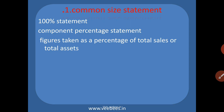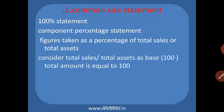In common size statements, the figures are taken as a percentage of total sales or total assets. Each and every item in the income statement is represented as a percentage of sales, and each item in the balance sheet is represented as a percentage of total assets. The total asset value is taken as 100, and in the income statement, total sales is taken as 100 — this is considered the base.